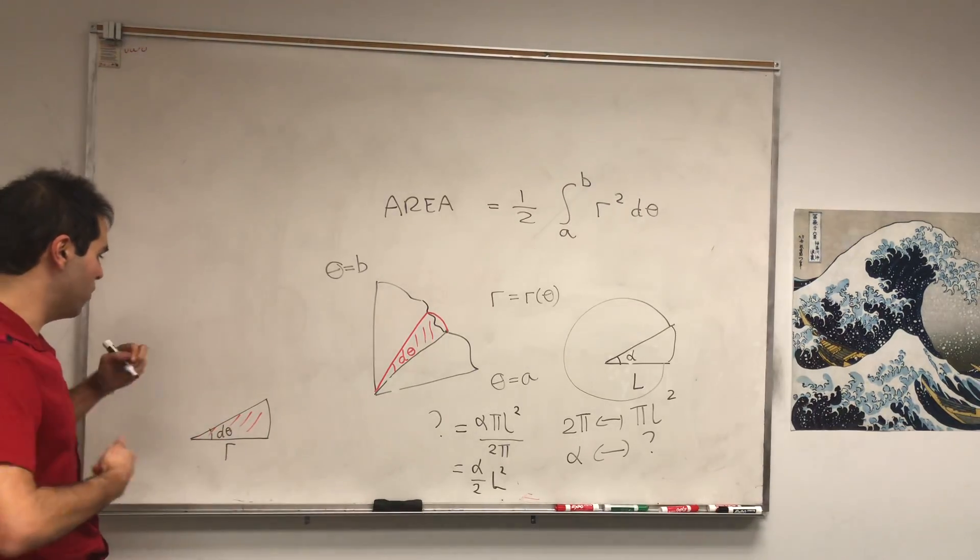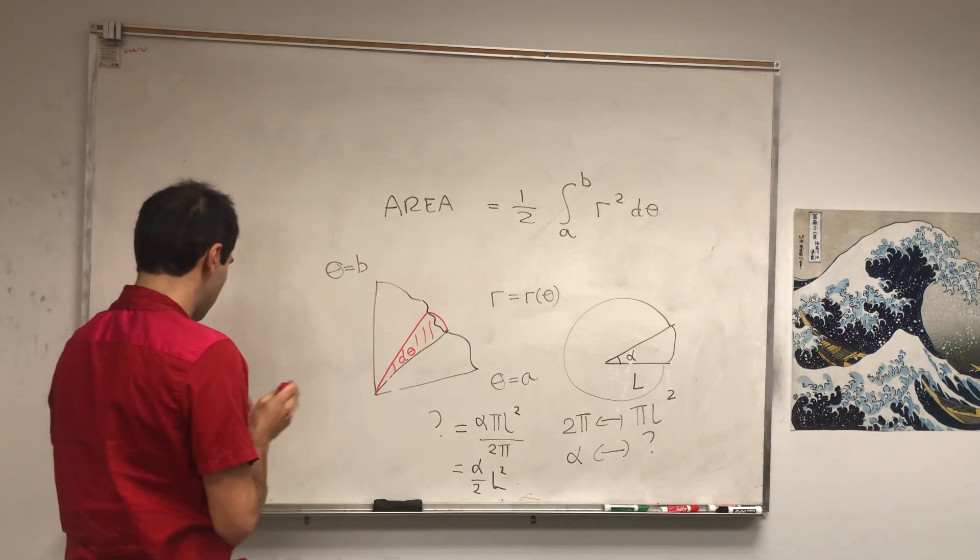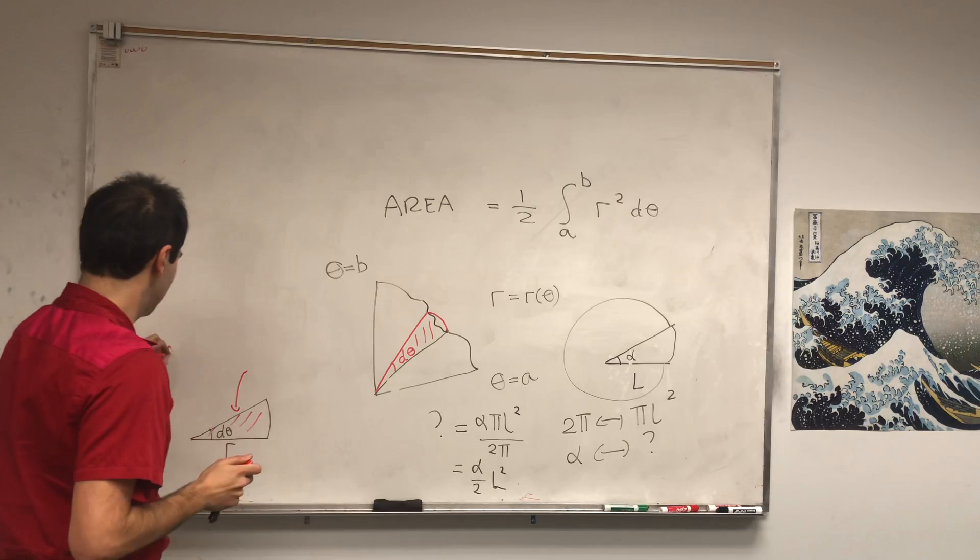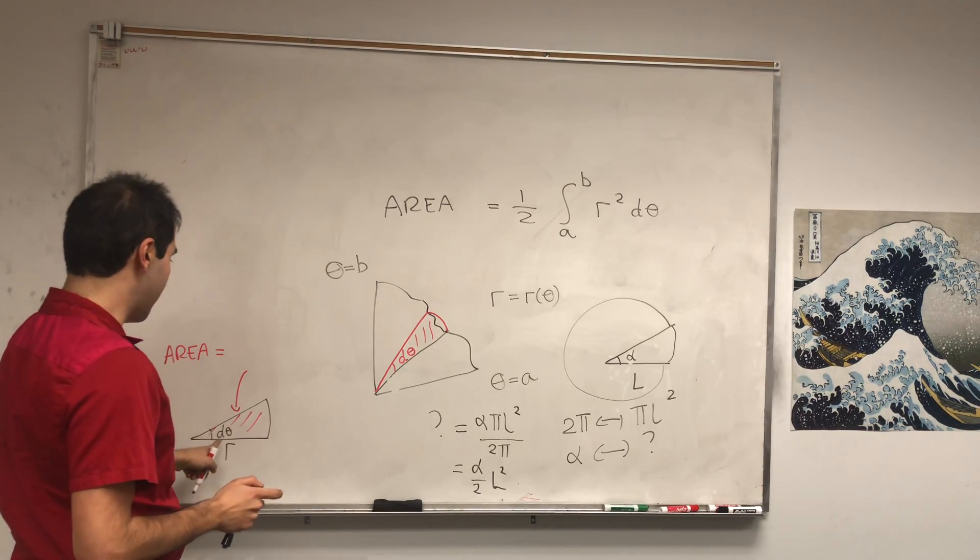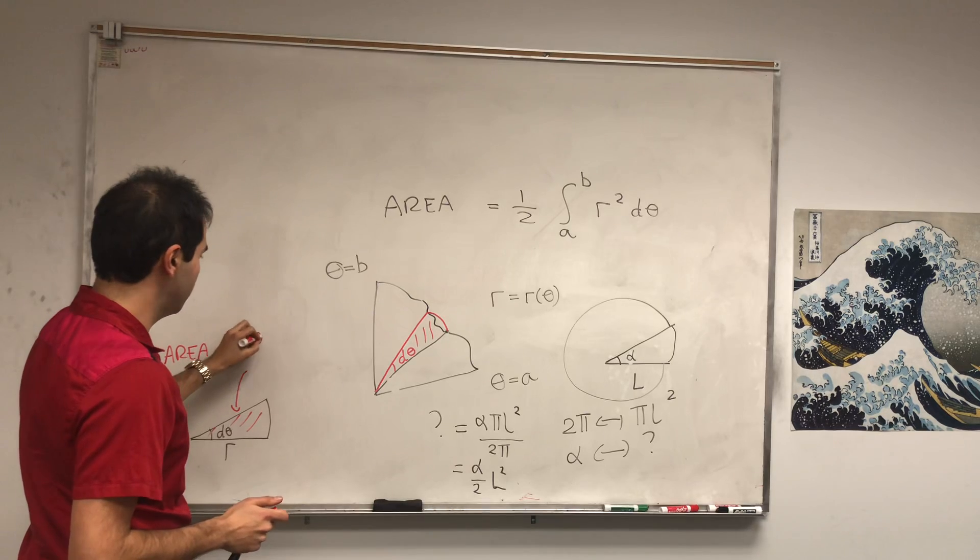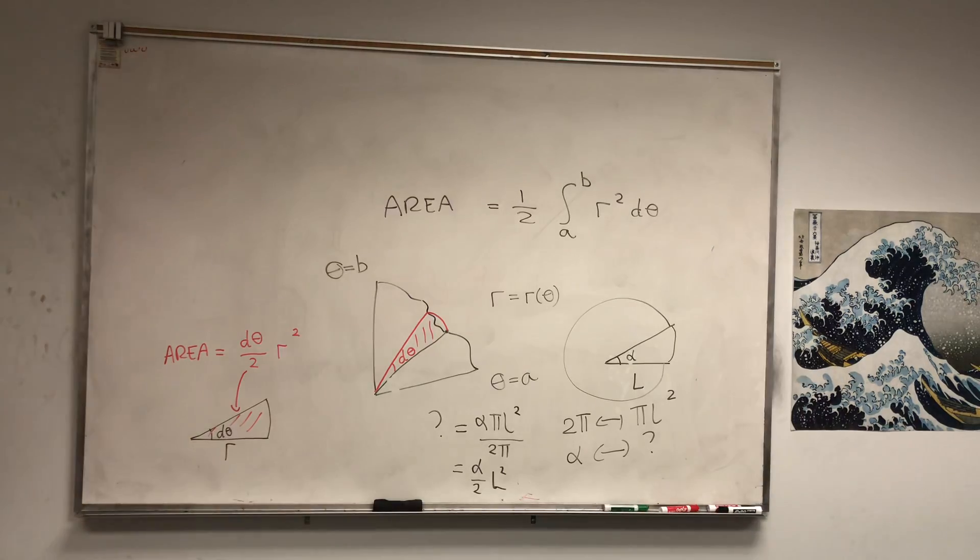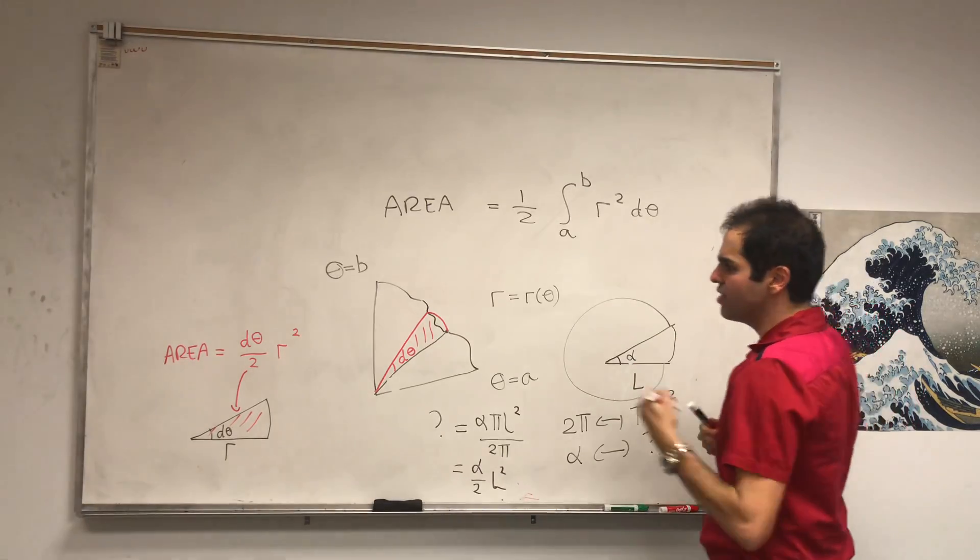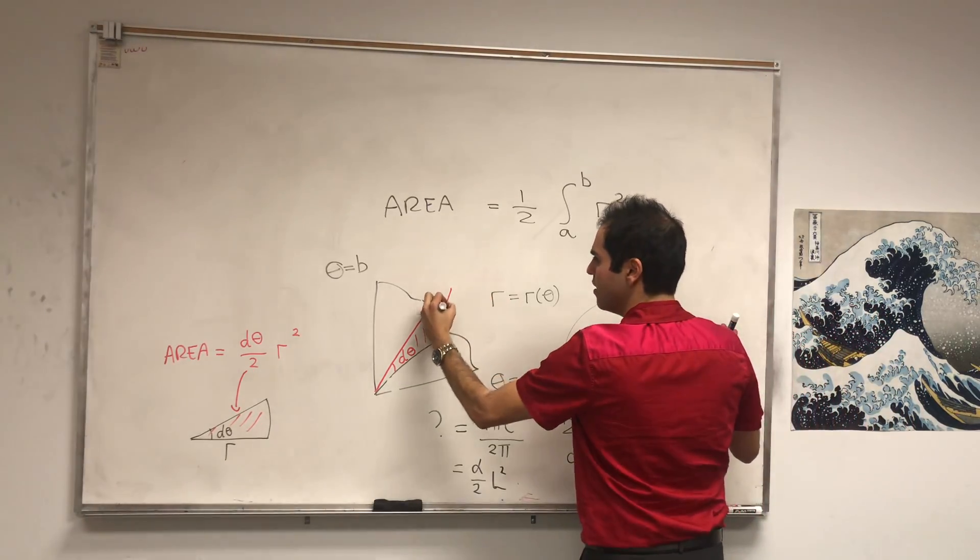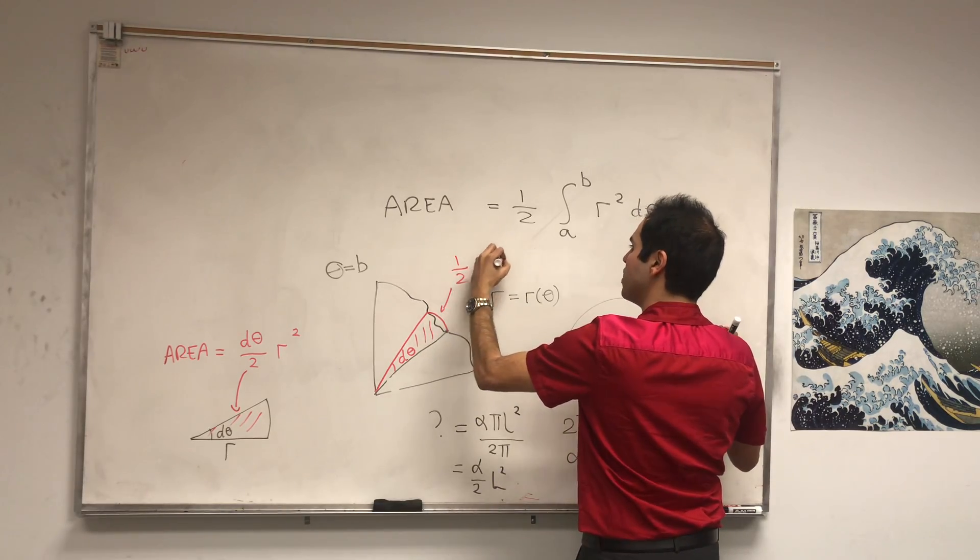So, the angle over 2 times the radius squared. So, in particular, the area of that becomes, again, the angle, which is d theta, over 2 times the radius squared, which is basically what we have here, 1 half r squared d theta. So, in other words, as I said, the area of this wedge here becomes 1 half r squared d theta.